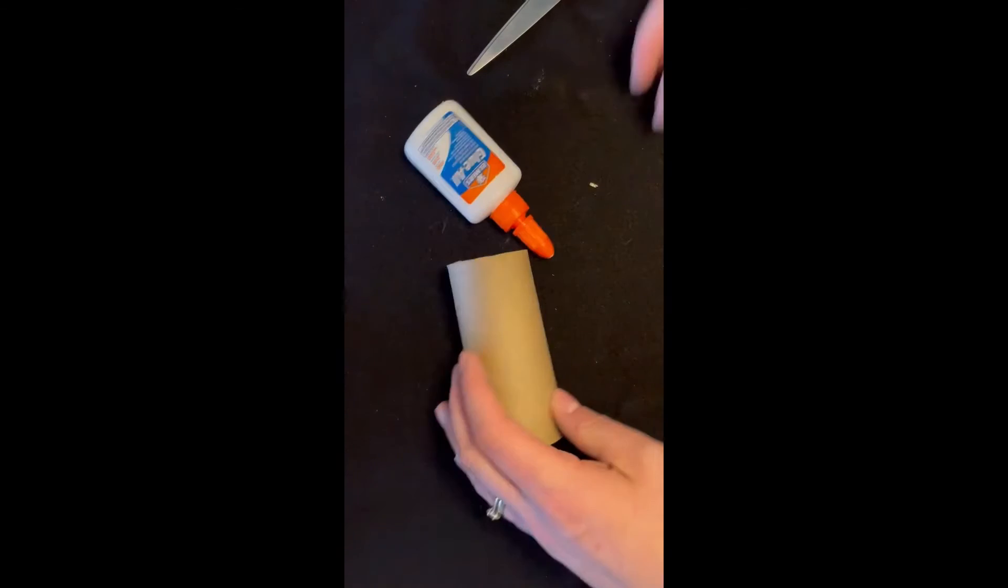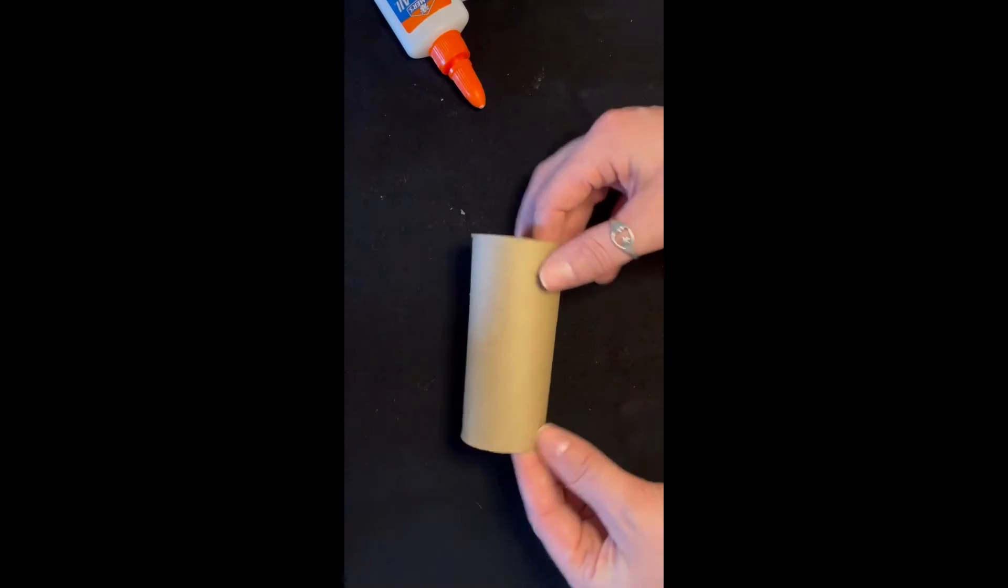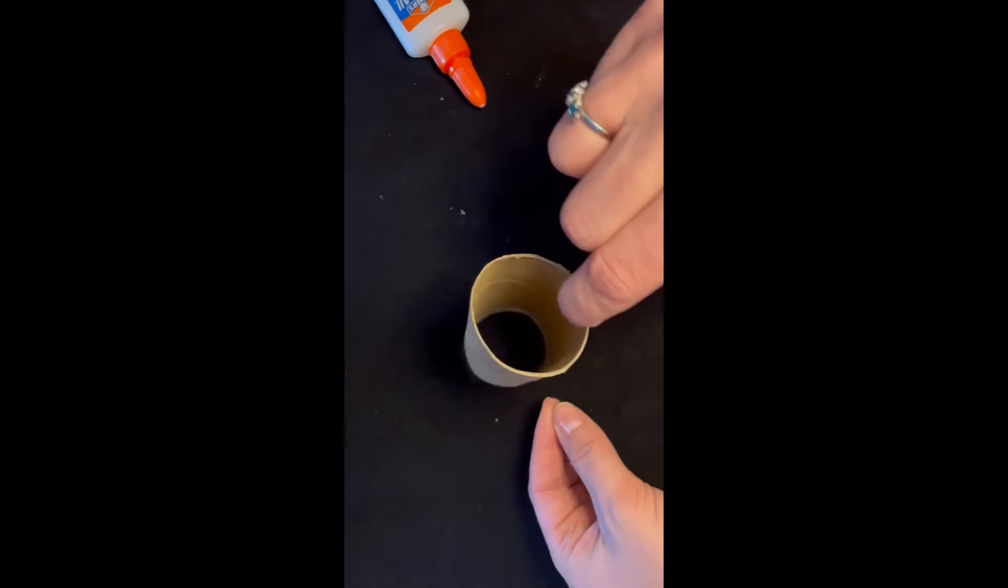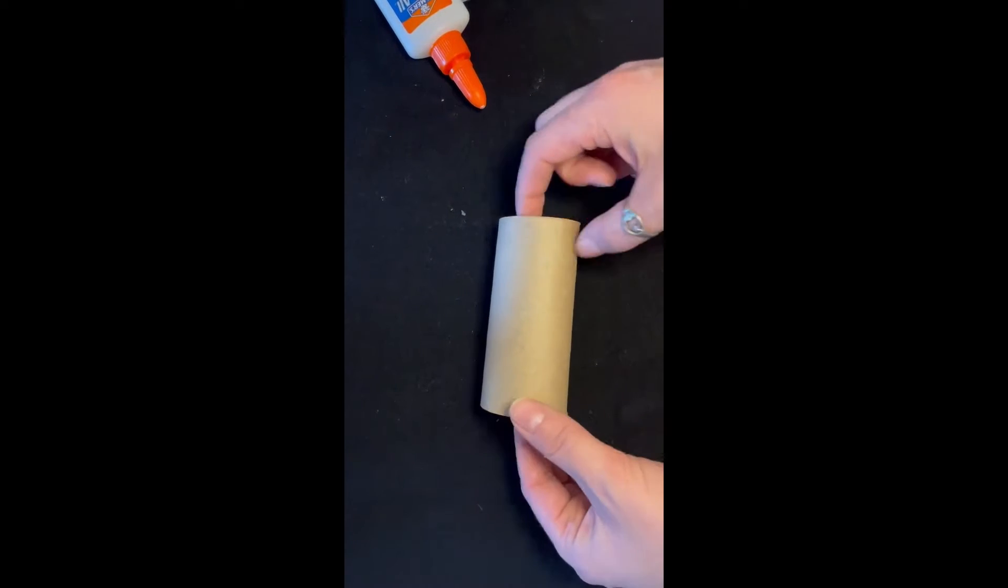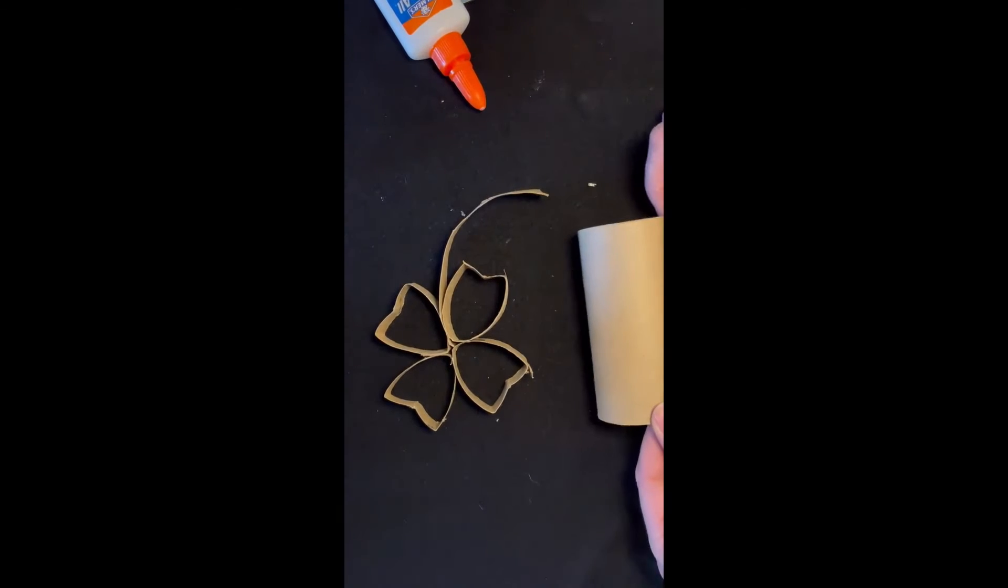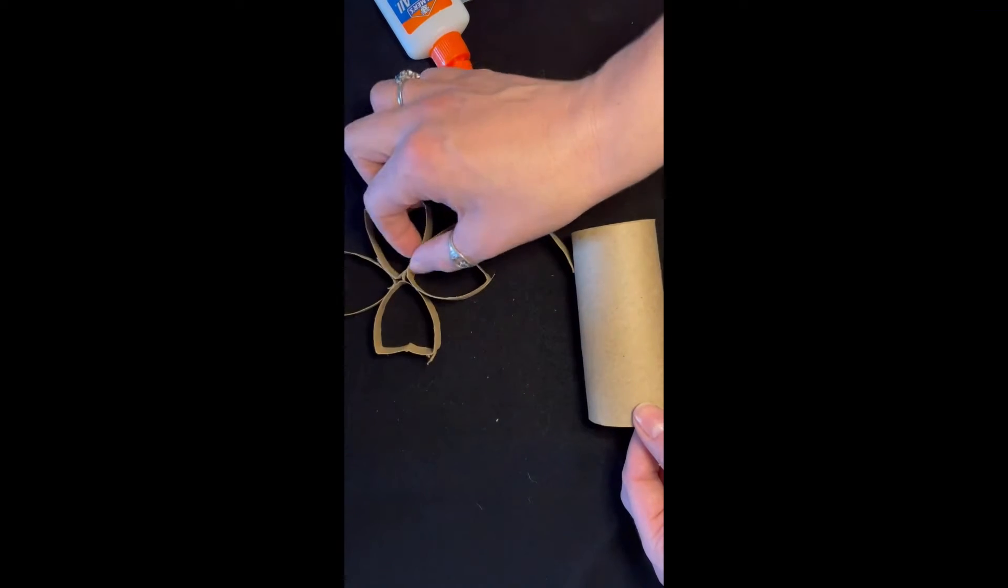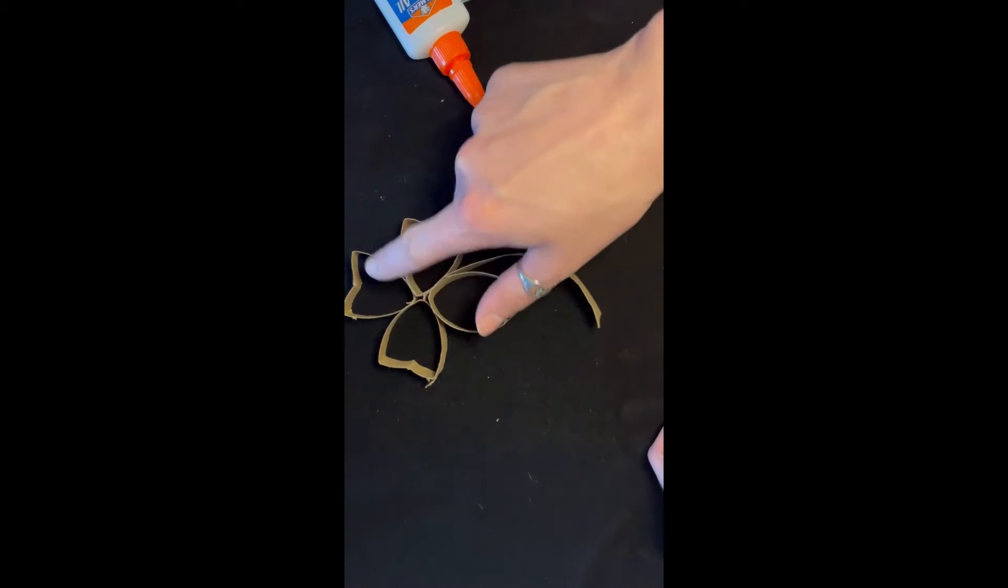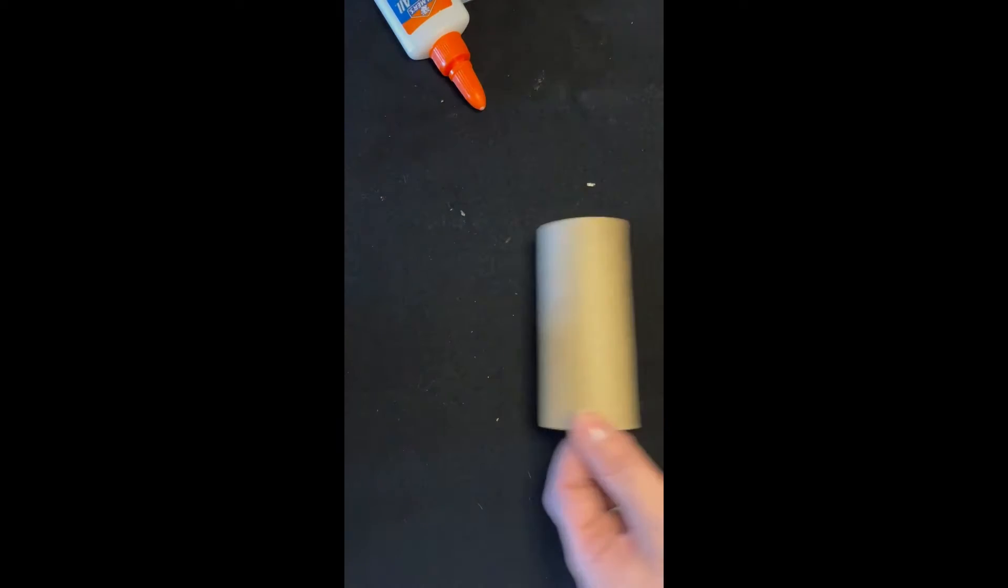But toilet paper rolls are 100% recyclable as long as they're clean and dry. Or you can repurpose them for this cute little St. Patrick's Day craft. So as you can see, you actually need one, two, three, four, five little sections.